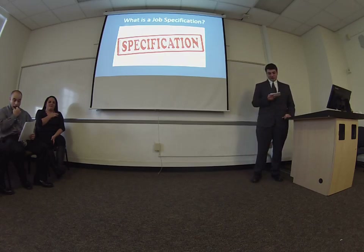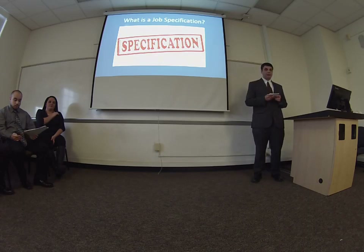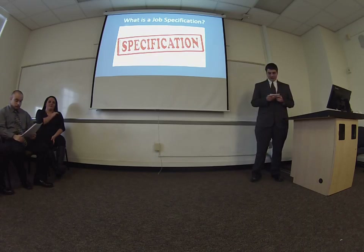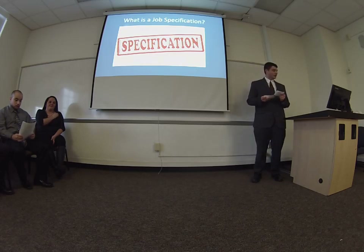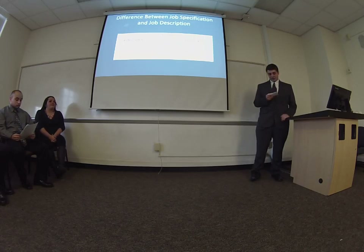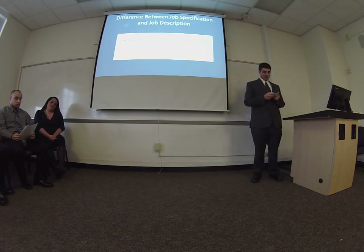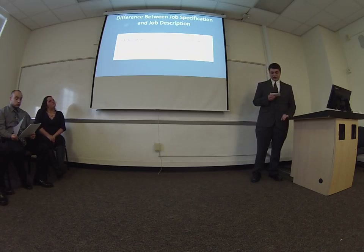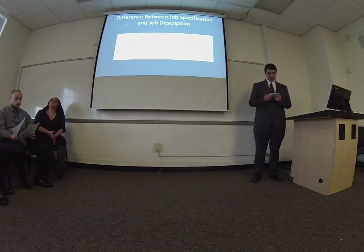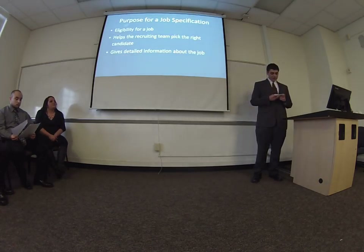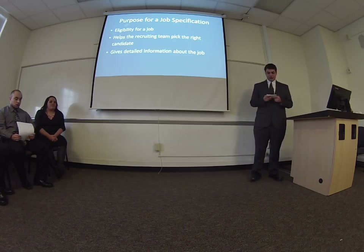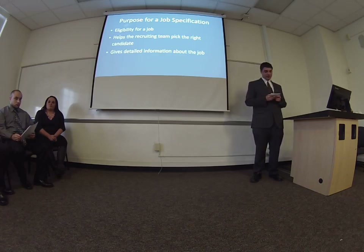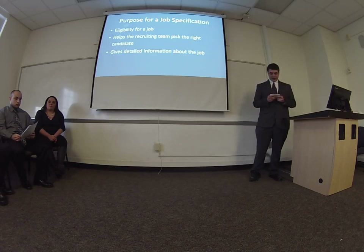Job specifications are formed from the job description. The job specification is the statement of the essential components of a job class, including a summary of the work to be performed, primary duties and responsibilities, and the minimum qualifications necessary to perform the essential functions of the job. The job description covers the job title, hours of work, duties and responsibilities, working conditions, and salary and incentives, while job specification focuses on the necessary qualifications, qualities, experience, training, and interpersonal skills required for the job. Job specifications help candidates analyze whether they are eligible to apply for a particular job, and help the recruiting team understand what level of qualifications and characteristics a candidate should have.